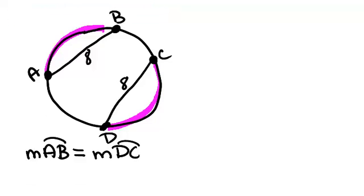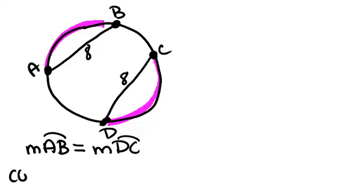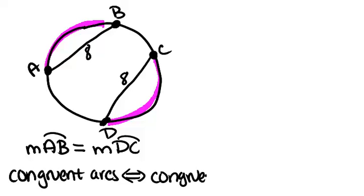Basically, the idea is congruent arcs mean congruent chords, and vice versa. That's why I have the arrow pointing in both directions. If you have two chords that are the same, then the arcs will be the same, and if both arcs were the same, that would mean that the chords have to be the same as well. That's the first thing that you need to know about chords, an interesting property.